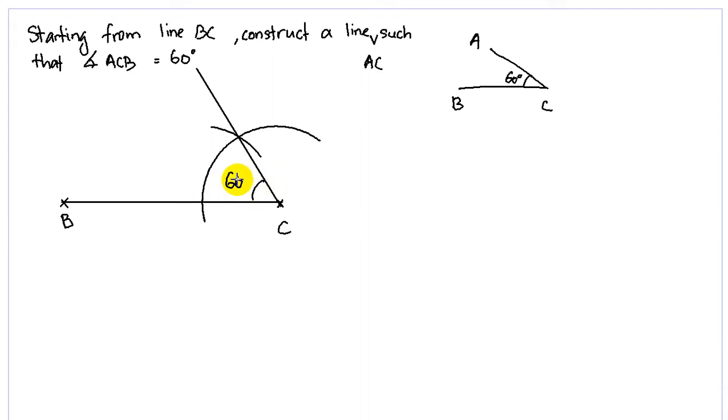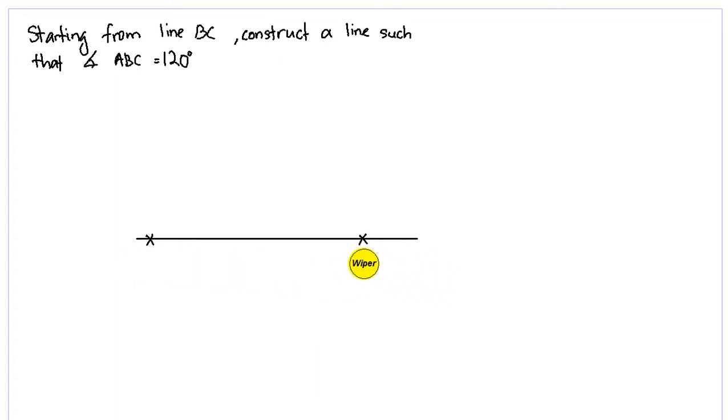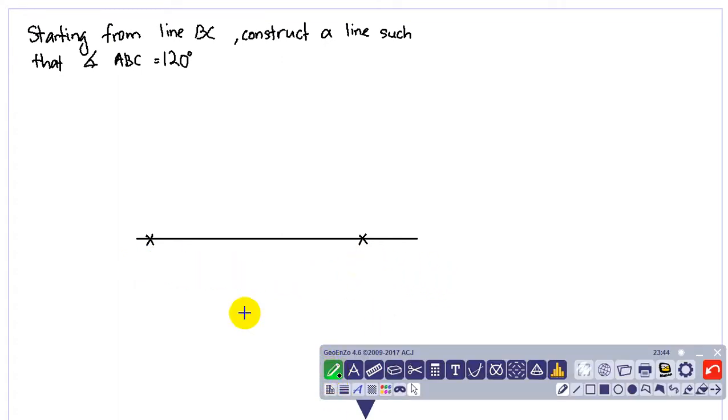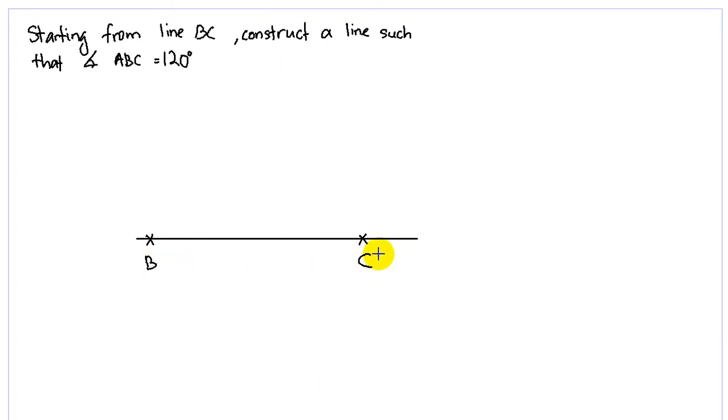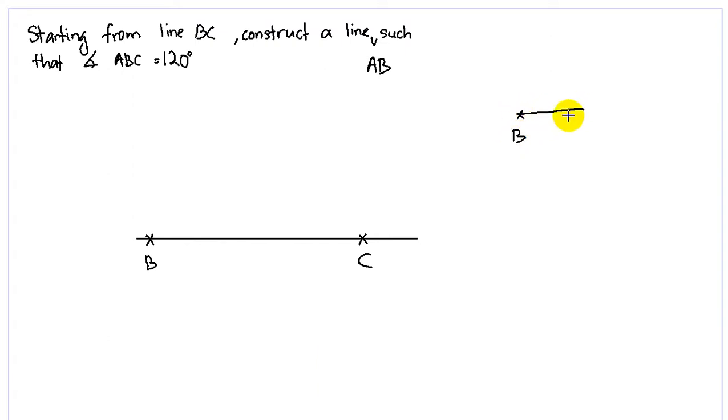Here it will be 60 degrees. Let's try 120 degrees. Same thing here, you have a line given to you. This should be BC and you need to construct a line AB such that ABC is equal to 120. Okay, this is B and this is C. A is somewhere around here.